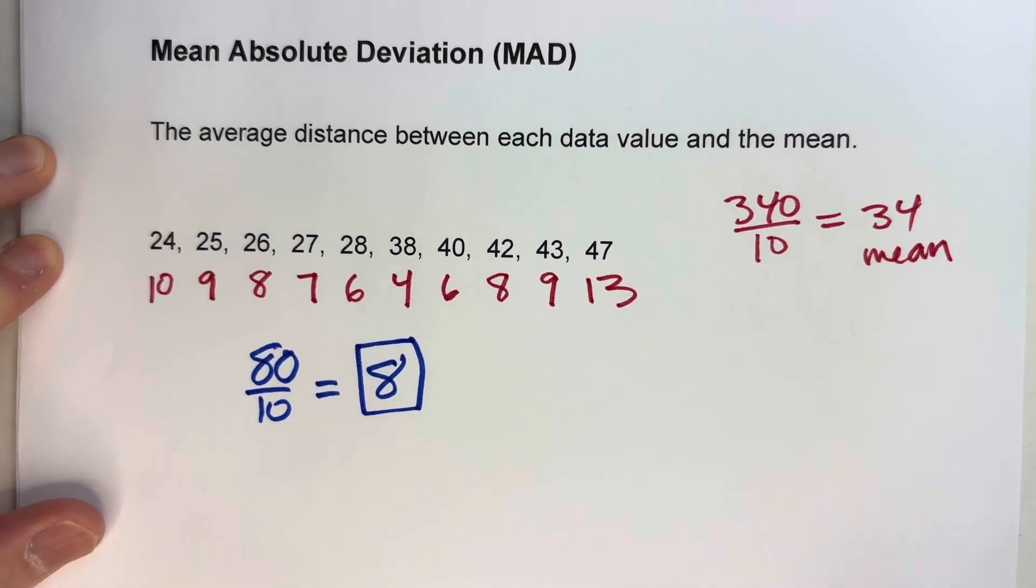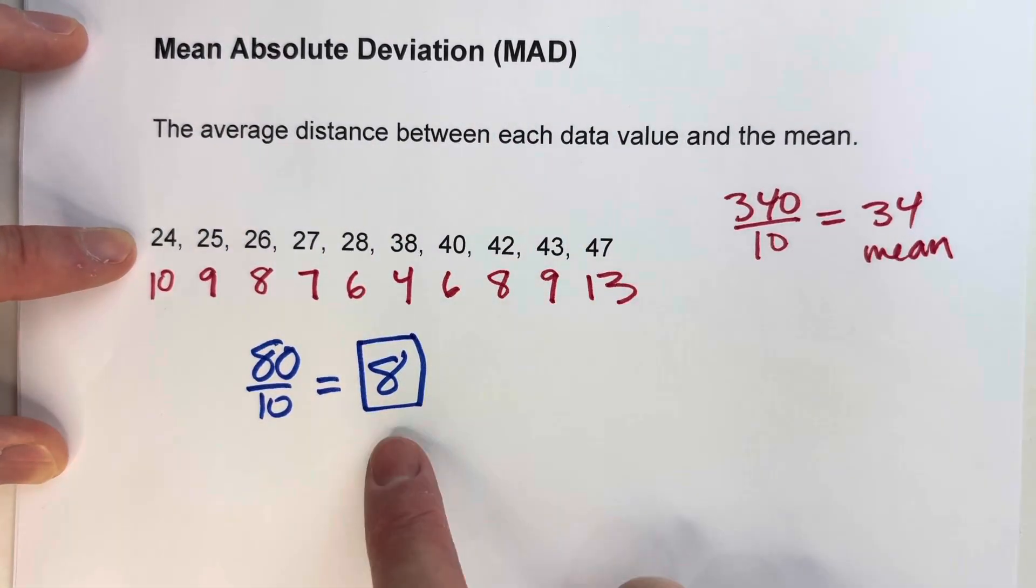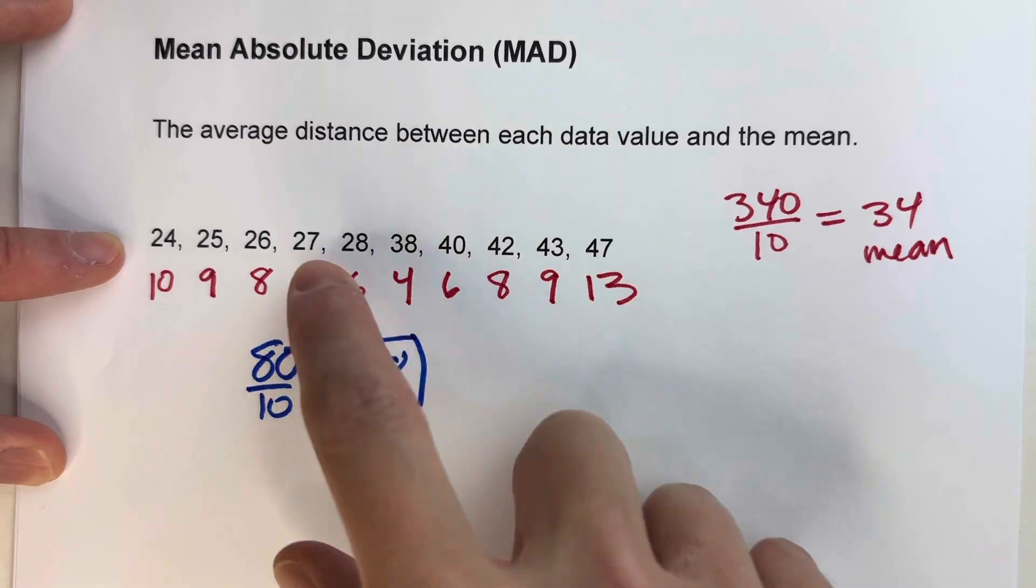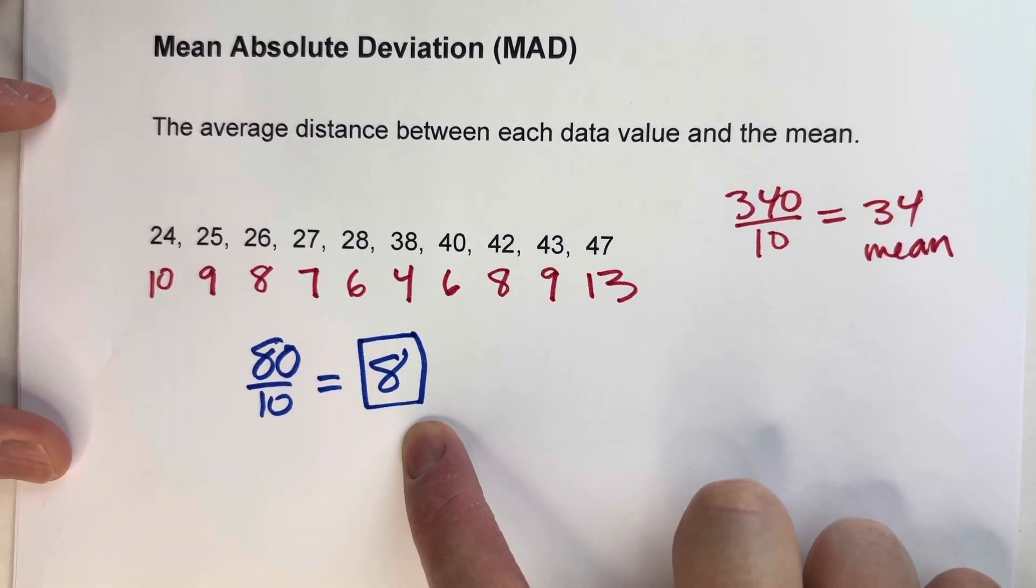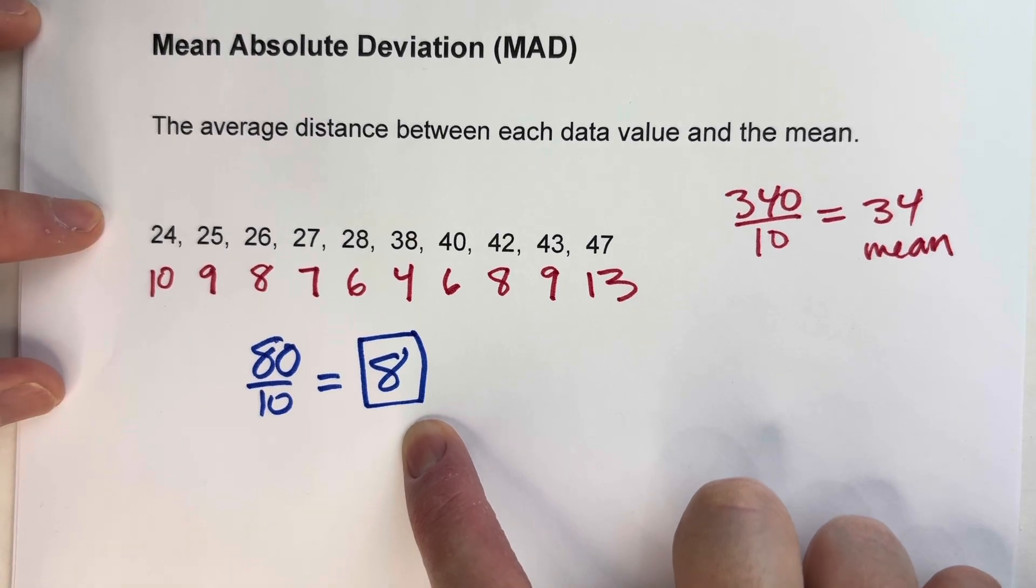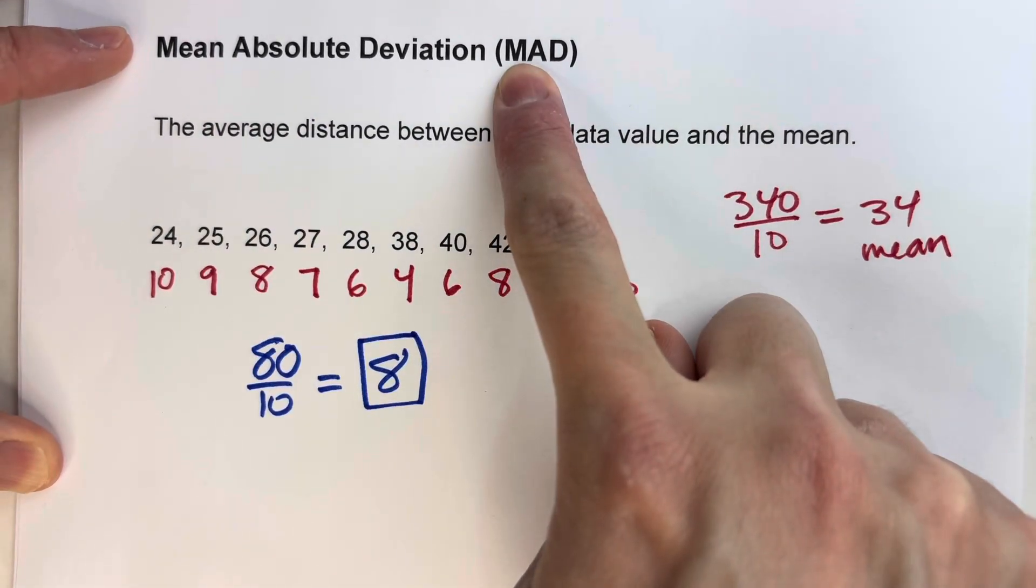Now, what that tells us is, on average, our data values are 8 away from the mean. So what that gives us is kind of a number that tells us just how spread out our data values are. All right, so that's the mean absolute deviation.